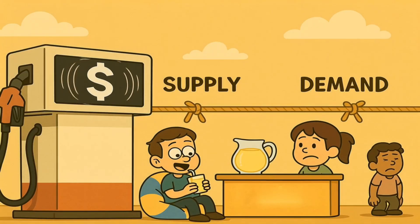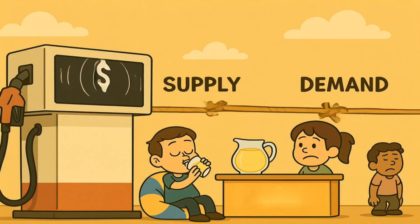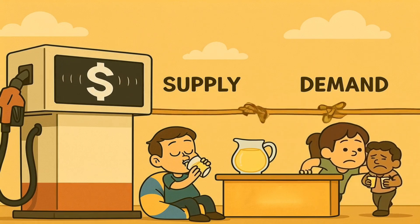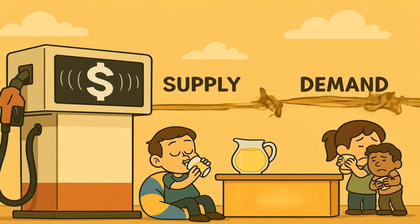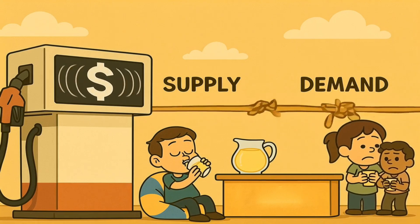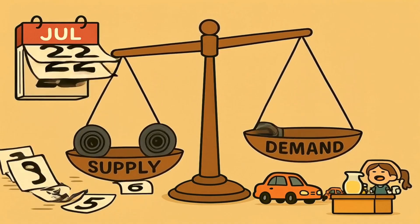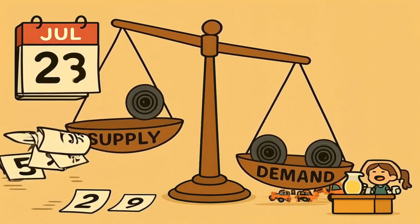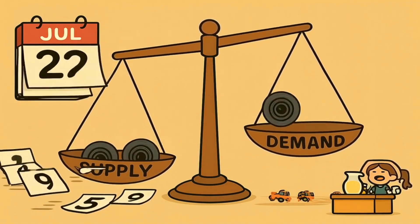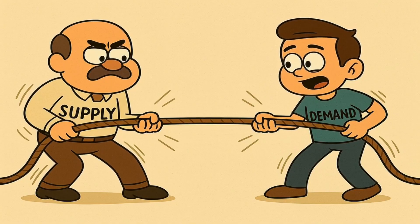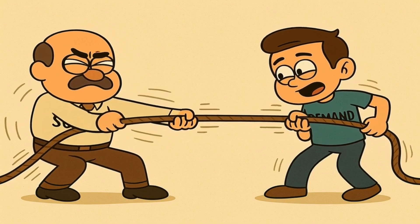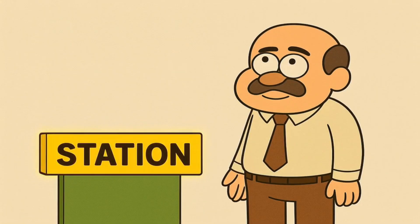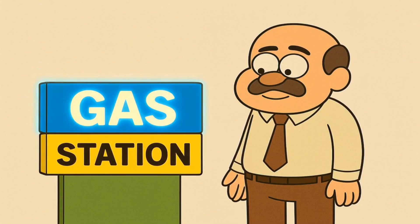What if you made ten giant pitchers of lemonade, but it's a cold, rainy day and nobody's thirsty? Well, you have way more lemonade than people want. You'll have to lower your price — maybe even just give it away just to get rid of it. That is high supply and low demand, which makes the price go down. Now, gasoline works the exact same way. The price that you pay at the pump is just the final number after a whole lot of people play this supply and demand game.